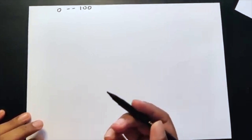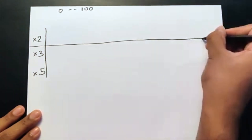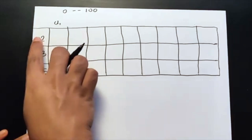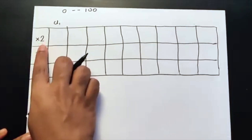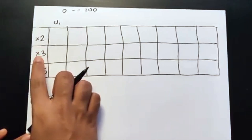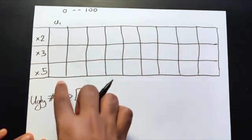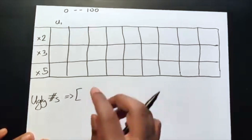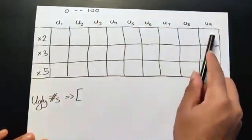That's the faster approach we're going to use. To understand how it works, let me draw a quick table. Each row has a multiplier: the first row multiplies by 2, the second by 3, and the third by 5. Each column corresponds to an ugly number — U1 is the first ugly number, and we go all the way up to U9.